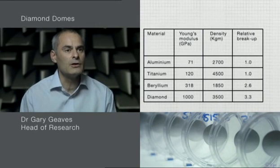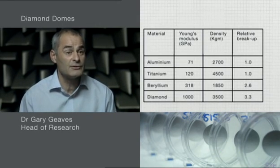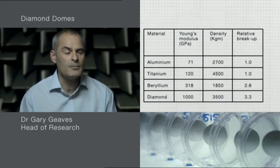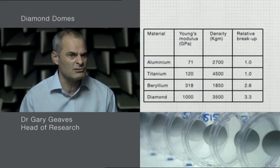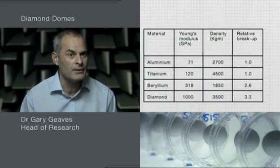We started to look at alternative materials that we could use instead of aluminium. There are quite a few materials that you could use, but the ultimate material from a rigidity, a dynamic stiffness point of view, is diamond.